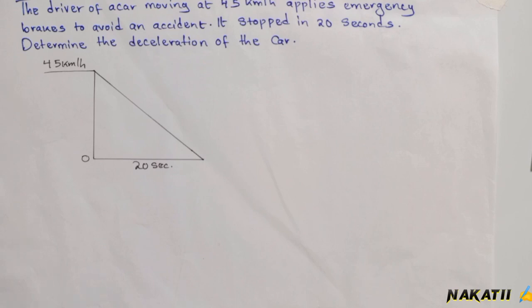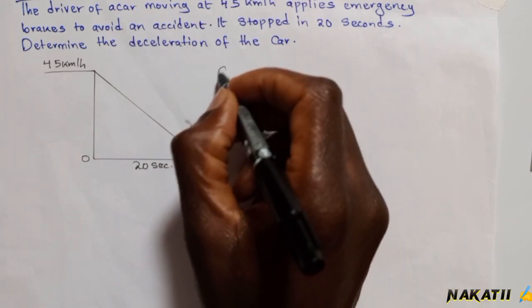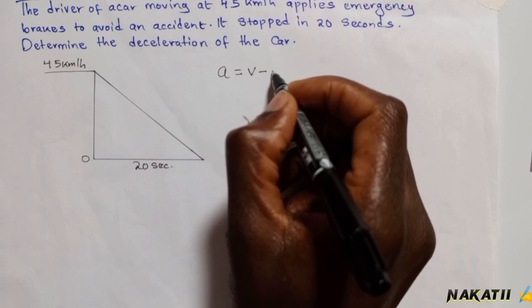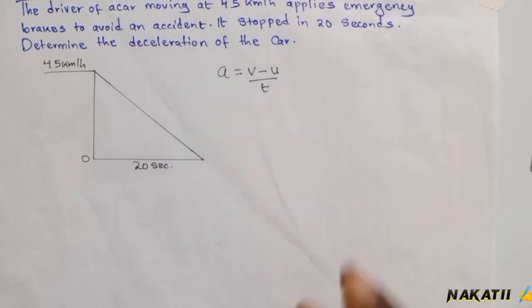...deceleration is negative acceleration. Therefore, acceleration equals final velocity minus initial velocity divided by time taken: a = (v - u) / t.